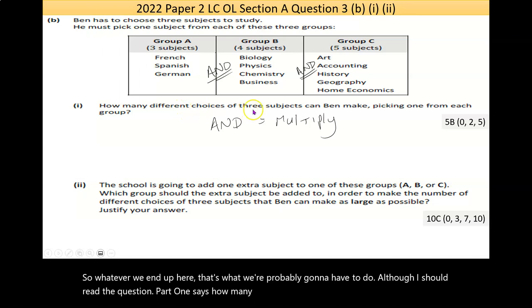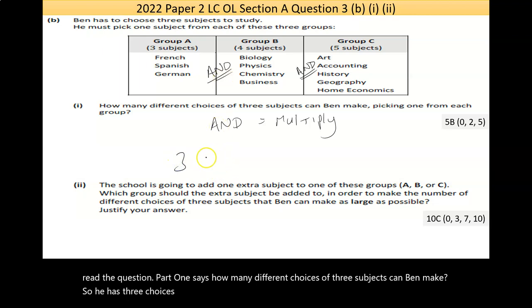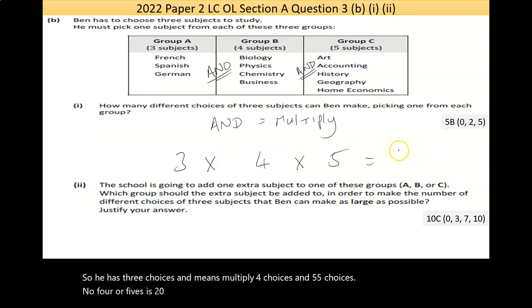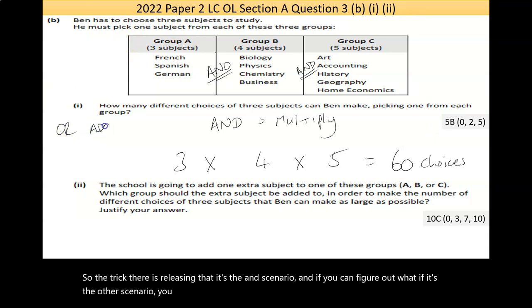Part 1 says, how many different choices of three subjects can Ben make? So he has three choices, and means multiply, four choices, and five choices. Now, four times five is 20 times three is 60. He has 60 choices. That seems legit. So the trick there is realizing that it's the and scenario. And if you can figure out, if it's the or scenario, you add. If it's the and scenario, you multiply.